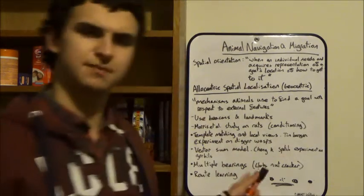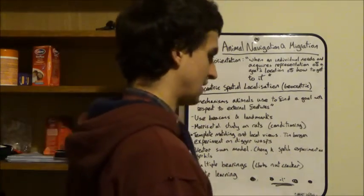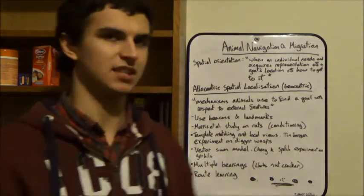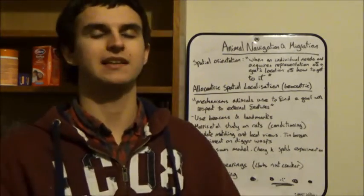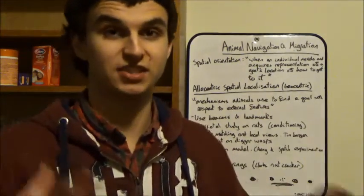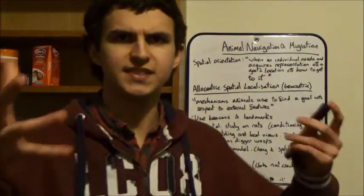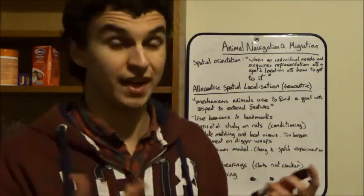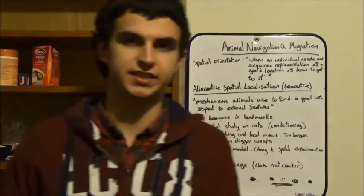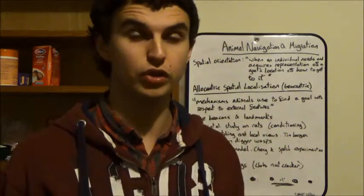Right. This mechanism is route learning and this is all based on multiple stimulus response interactions. And this route learning increases with age going back to the orientation flights of bees. When they're younger they'll do the orientation flights but as they get older they don't need to anymore because they've learned the route.